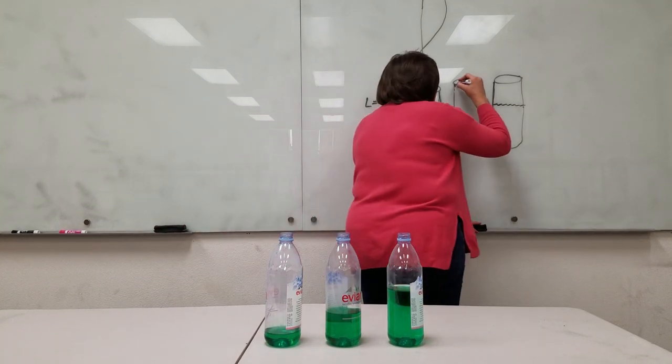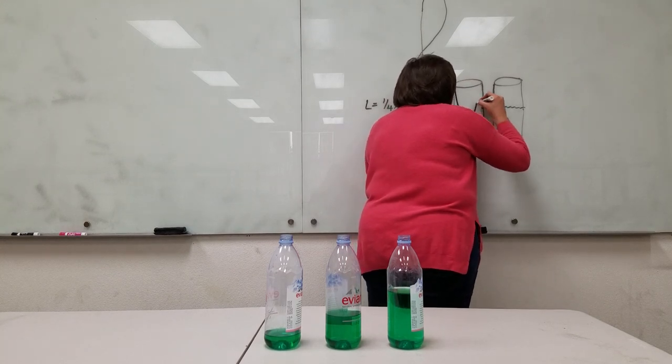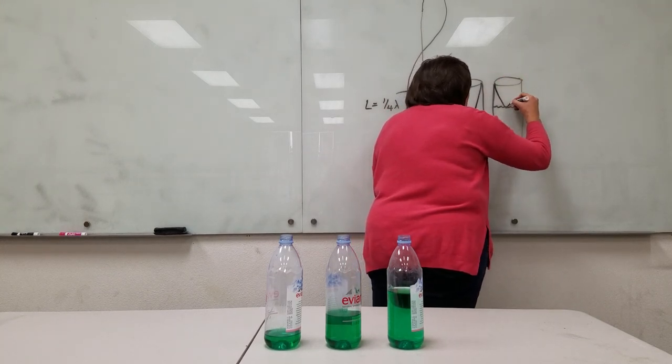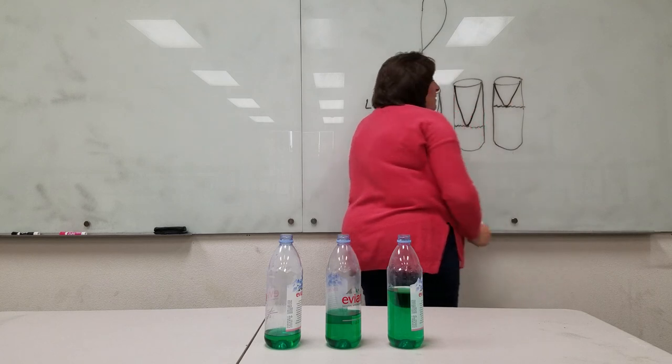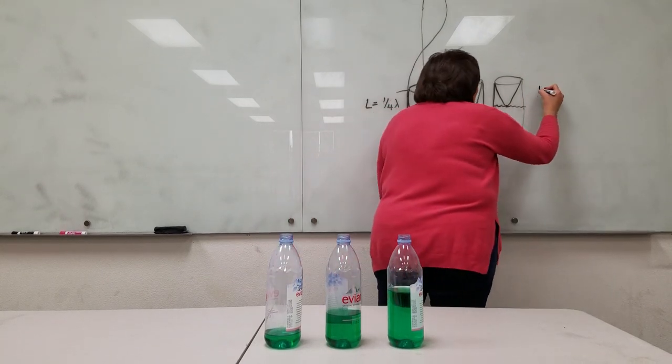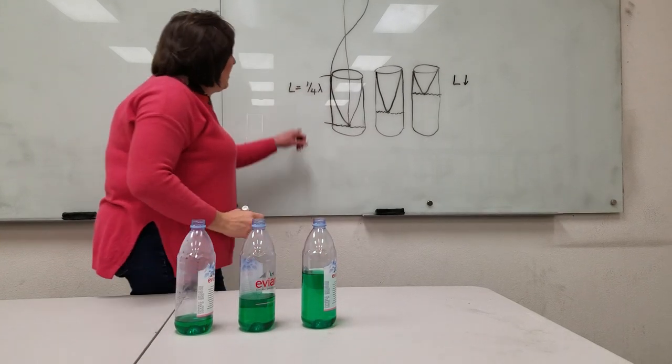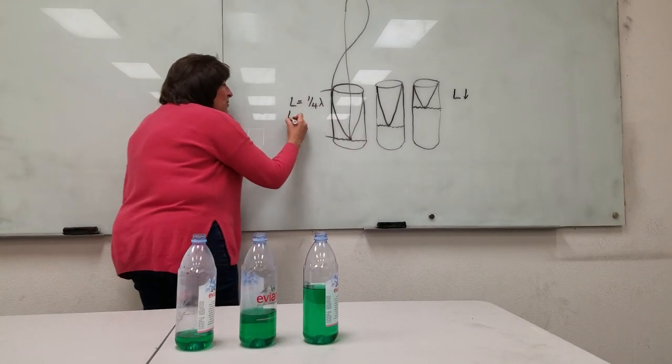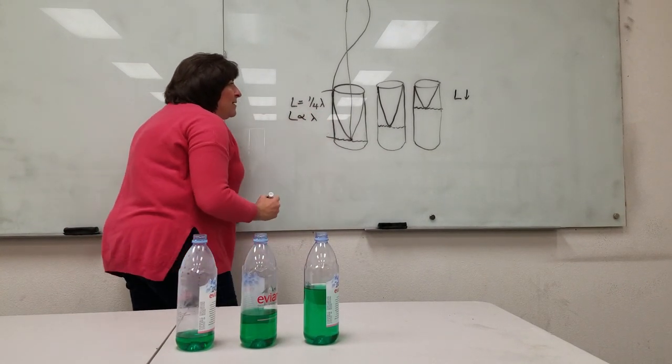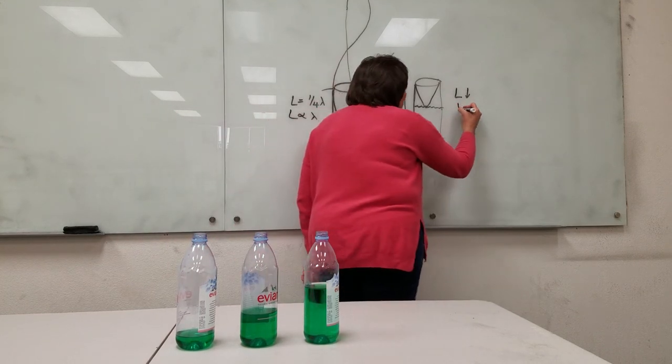But that's true for all of the bottles, right? If they're all bouncing off the top of liquid, then this one, the length of vibrating column is the smallest. And if length here is proportional to the wavelength there, that means the wavelength here has got to be the smallest.